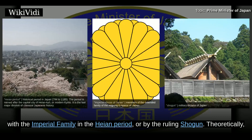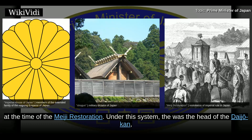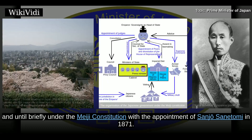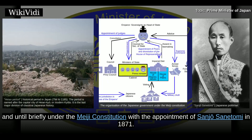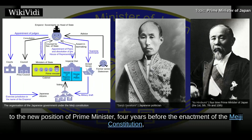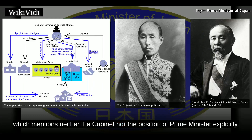Theoretically, the last Ritsu-Yo code, the Yoro code enacted in 752, was still in force at the time of the Meiji restoration. Under this system, there was the head of the Dajokan, the highest organ of Japan's pre-modern imperial government during the Heian period, and until briefly under the Meiji constitution with the appointment of Sanja Sanetomi in 1871. The office was replaced in 1885 with the appointment of Ito Hirobumi to the new position of prime minister, four years before the enactment of the Meiji constitution, which mentions neither the cabinet nor the position of prime minister explicitly. It took its current form with the adoption of the constitution of Japan in 1947.